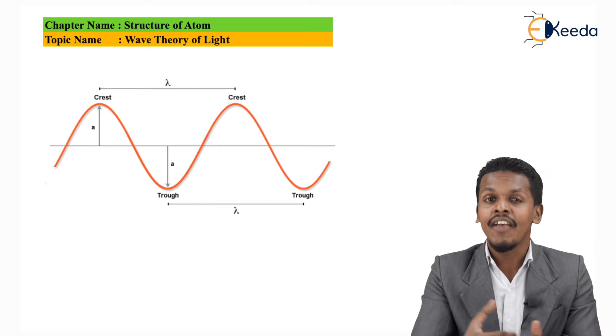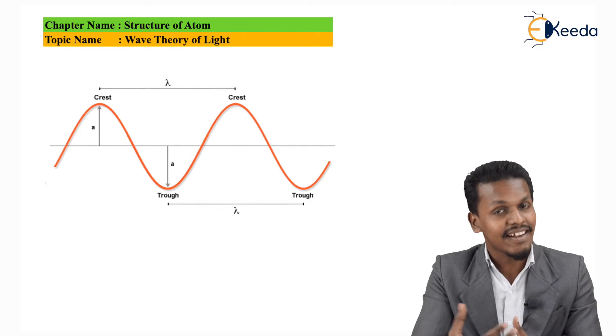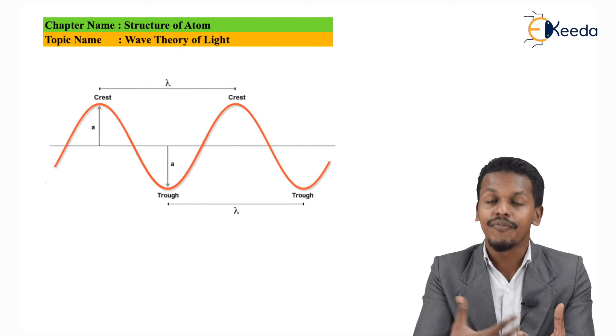And every wave travels in a form creating a crest and trough, and also every wave has different wavelength, frequency, as well as amplitude.